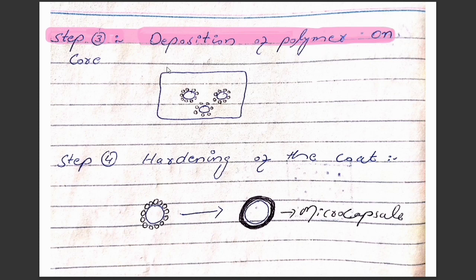The third step is the deposition of the polymers on the core. In this step the polymers will be deposited on the drug molecule or on the core material. The fourth step is the hardening of the coat — we will increase the temperature of the solution so the deposited polymer will form a hard layer around the core. This is called hardening of the coat and we will get microencapsules.